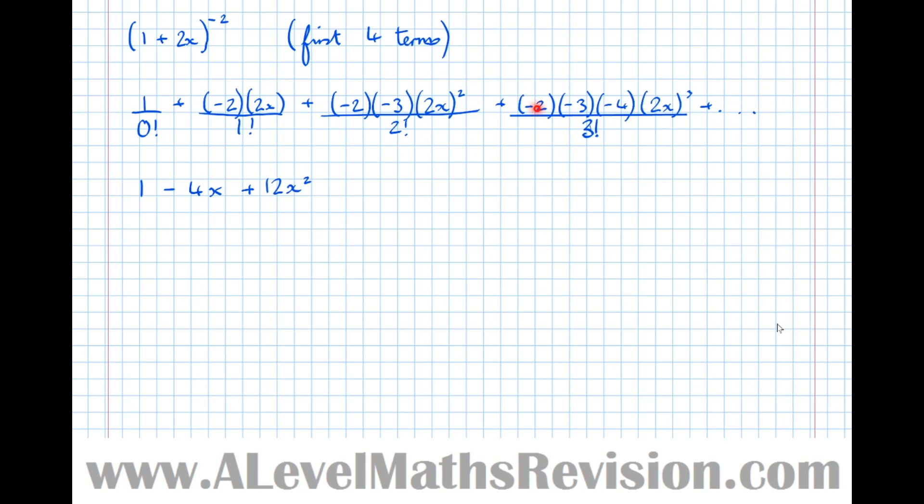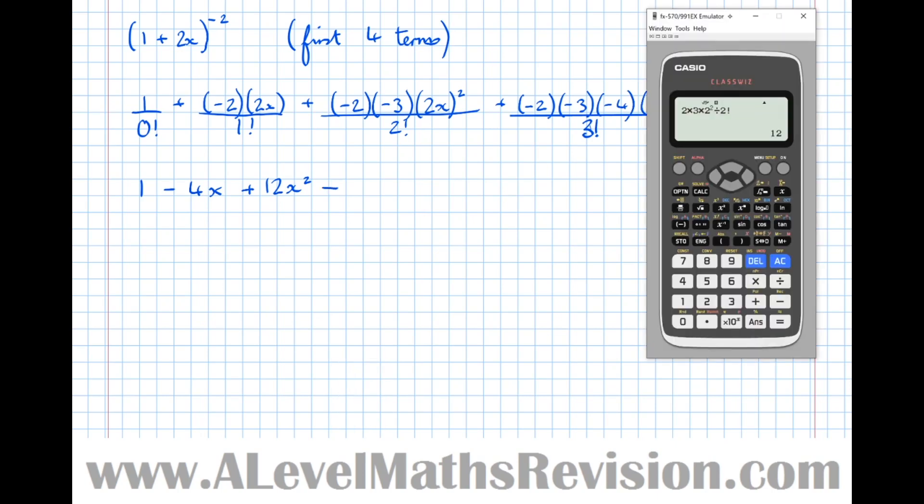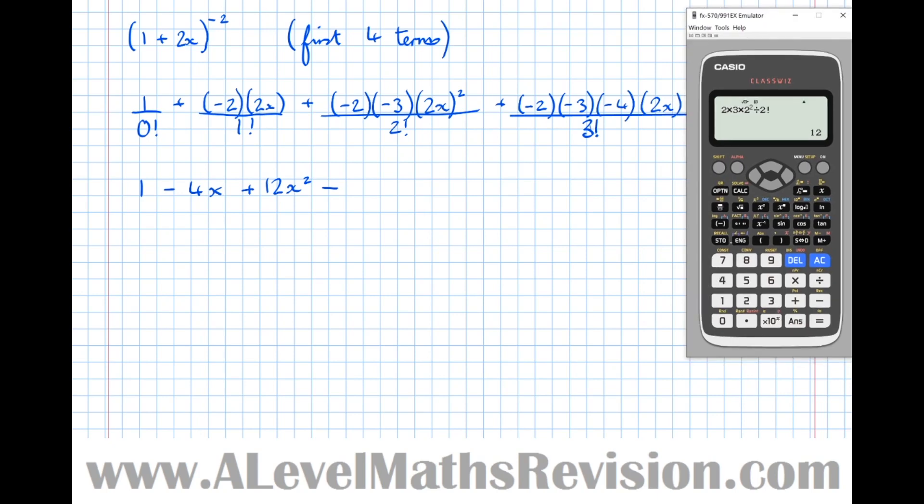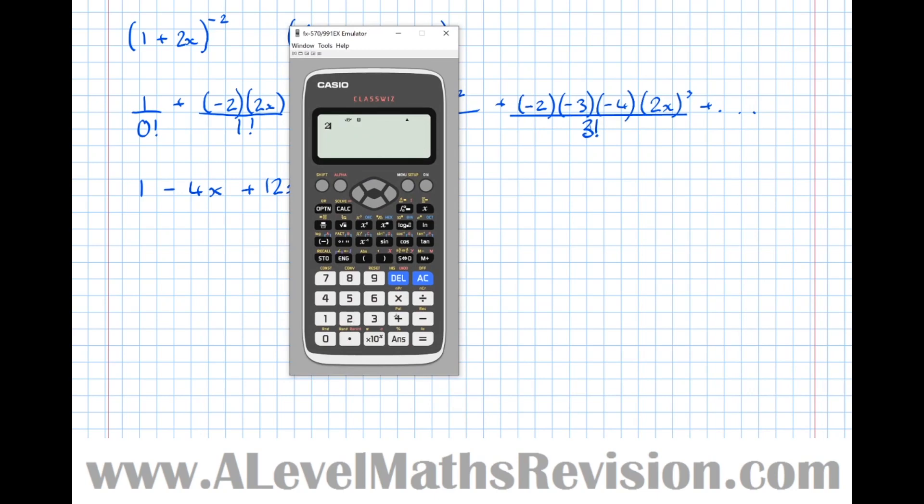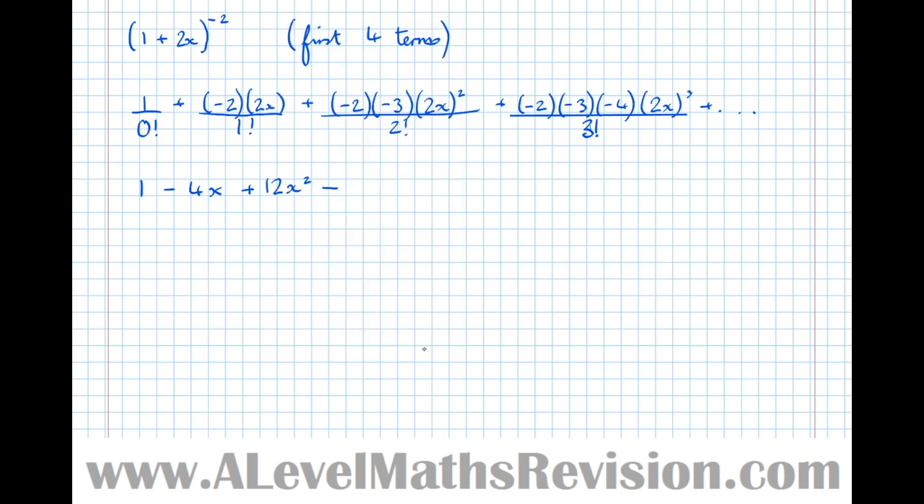Let's count the minus signs again. We've got 1, 2, 3 of them. So 3 minus signs altogether make a minus. Then we're just going to type the numbers in, forget about the signs. We've got 2 times 3 times 4 times 2 cubed divided by 3 factorial, which is 32. So minus 32x³ and so on.